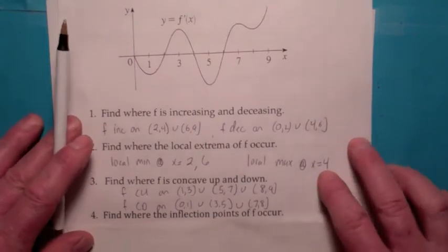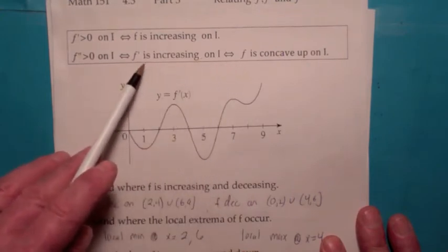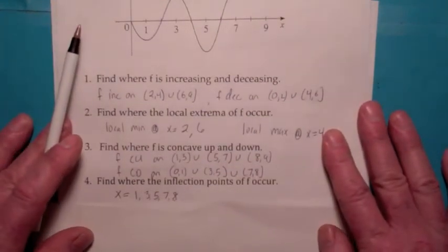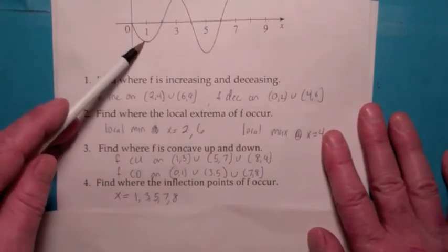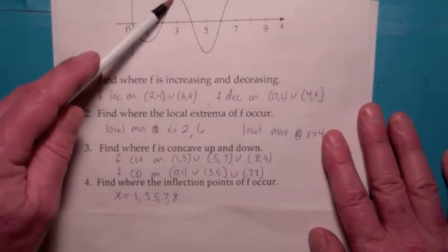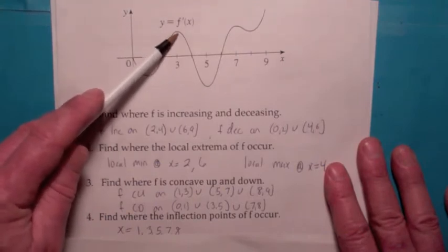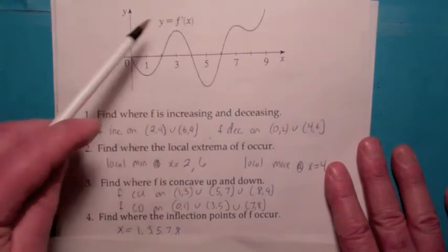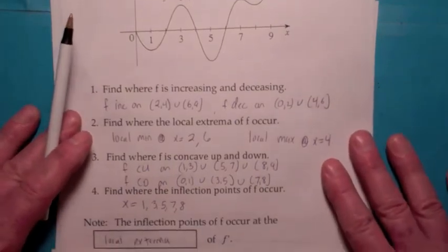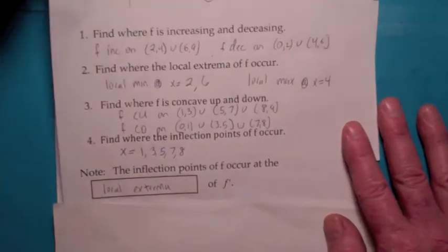Where do the inflection points of f occur? Inflection points occur wherever the concavity changes — that's where f prime goes from increasing to decreasing, or vice versa. At one, f prime goes from decreasing to increasing — a local minimum of f prime — so f has an inflection point there. Similarly, inflection points occur at three, five, seven, and eight. This is really important: the inflection points of f occur precisely at the same points as the local extrema of f prime.